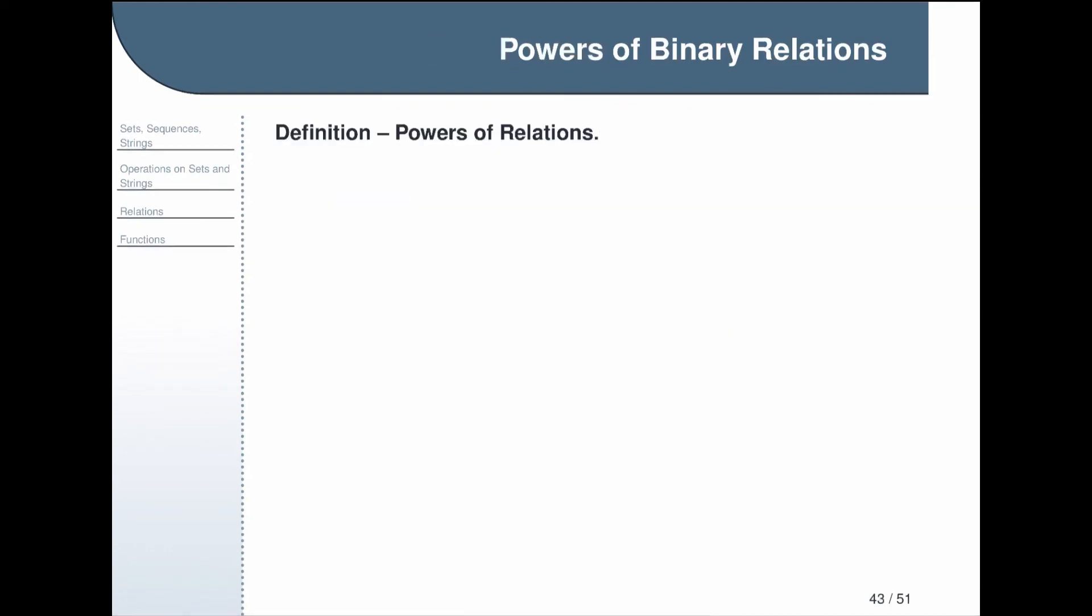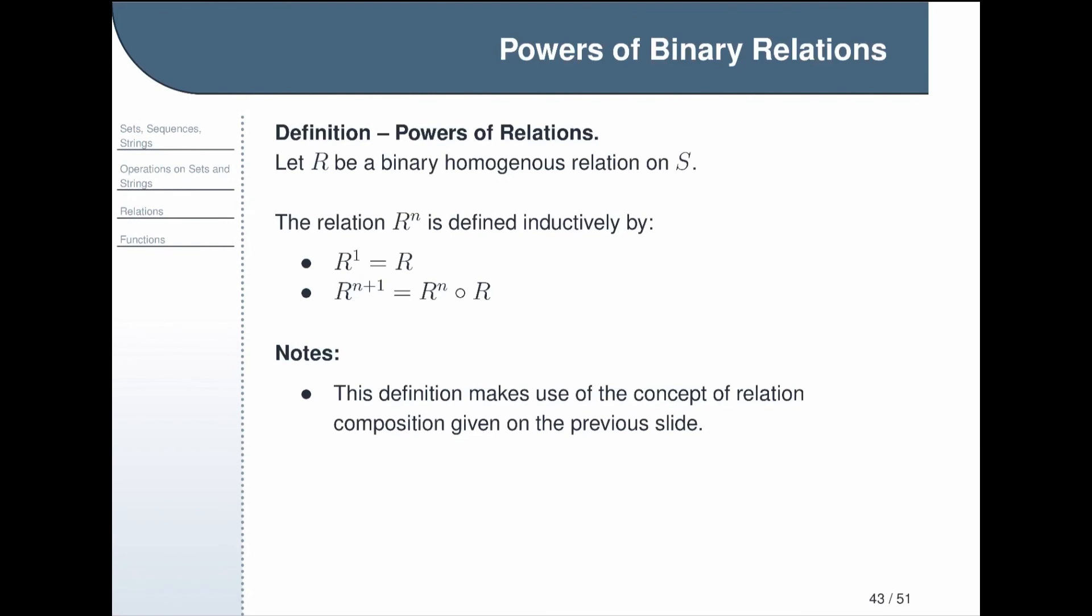Now the last operation we'll define on relations is powers of binary relations. Once you've absorbed the definition of composition, this is actually relatively easy. We have R, some binary homogeneous relation on S. In this case, all the sets are going to be the same. And then we can recursively define the powers of this relation R to the N, or inductively define them, by R1 is just R itself. This is just the original relation. And then each subsequent step, Rn plus 1, is equal to Rn composed with R. We're just using the composition definition from the previous slide here and applying it repeatedly to itself.